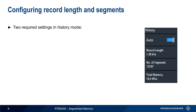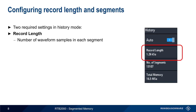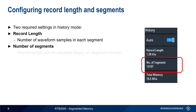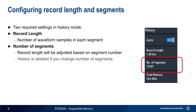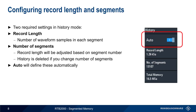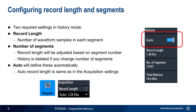There are two required settings in history mode. The first is record length, which defines the number of samples and therefore the time duration of each segment. The second is the number of segments. Like all oscilloscopes, the RTB has finite memory, so the record length will be adjusted based on the number of segments. Note that if you change the number of segments, this will delete any stored history data. The easiest way to configure these is to use the auto function, which uses the same record length defined in the acquisition settings and adjusts the number of segments accordingly.